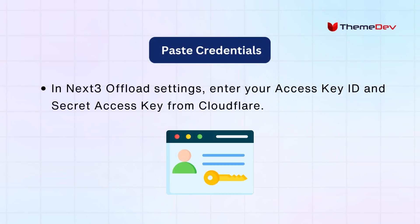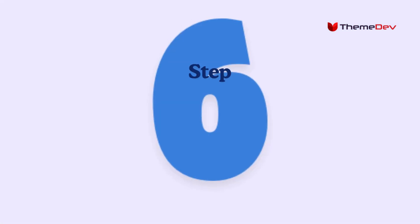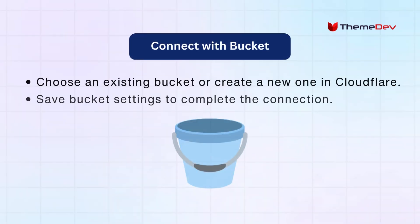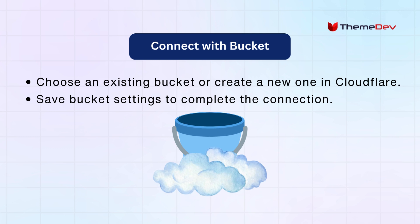In Next3 Offload settings, enter your access key ID and secret access key from Cloudflare. Choose an existing bucket or create a new one in Cloudflare. Save bucket settings to complete the connection.